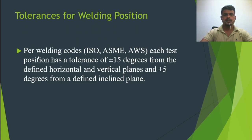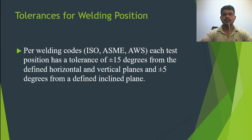Every code and standard has some tolerance. If you summarize all the weld position codes — ISO, SP, LWS — each position has a tolerance of plus or minus 50 degrees for defined horizontal and vertical planes, and plus or minus 5 degrees for a defined inclined plane. This is the maximum tolerance. However, if you refer to ASME, ISO, and AWS, there may be some variation — some tolerances are less, some are more, within plus or minus 50 or plus or minus 5 degrees.